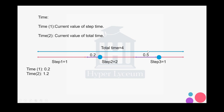So now if we are at another point, think about what the values for time 1 and time 2 would be. Time 1 should be 0.5 because it's the time in that step, and time 2 should be 1 plus 2 plus 0.5 which equals 3.5.